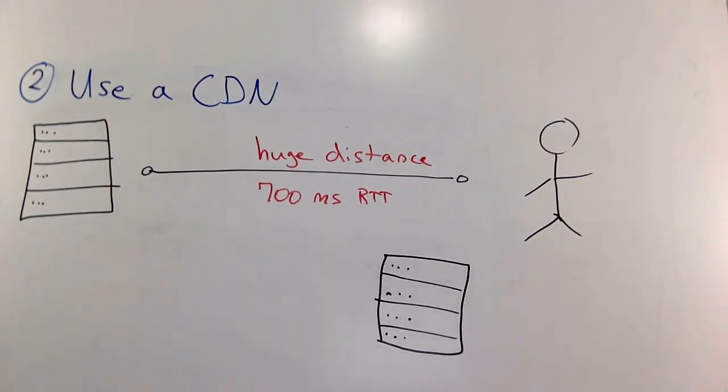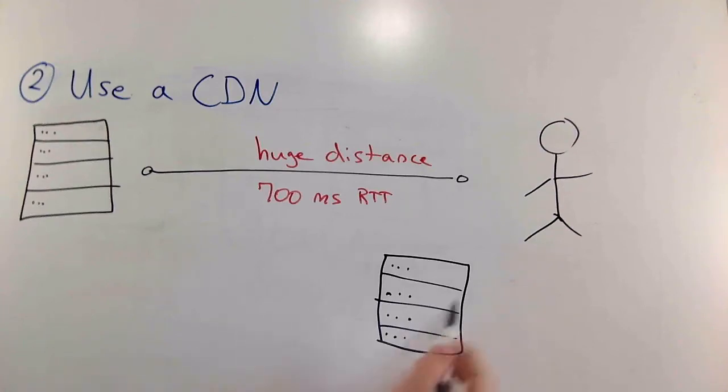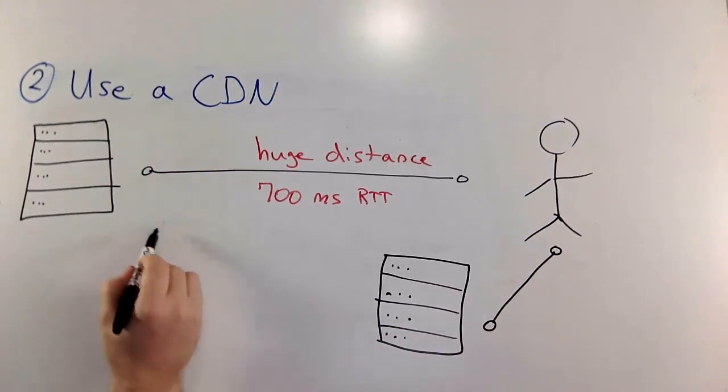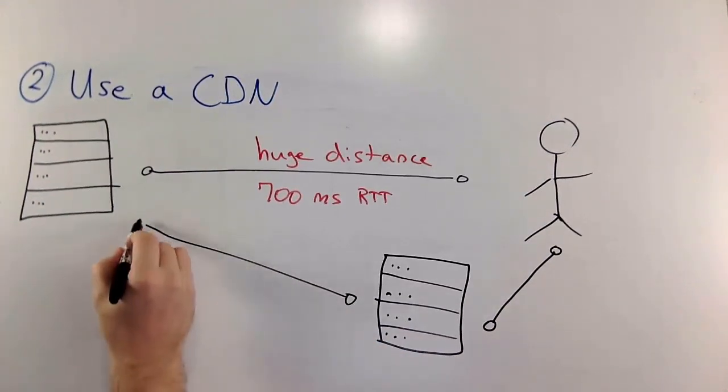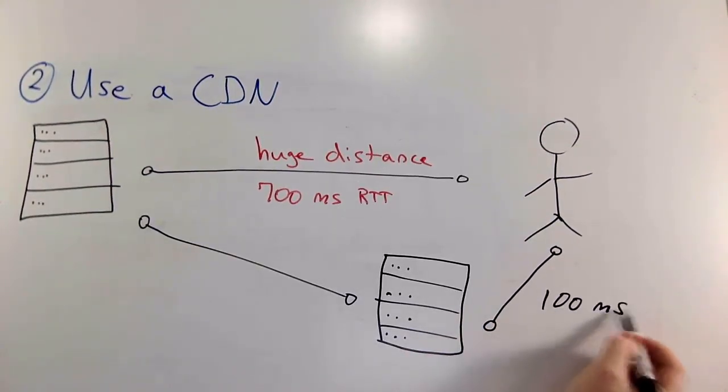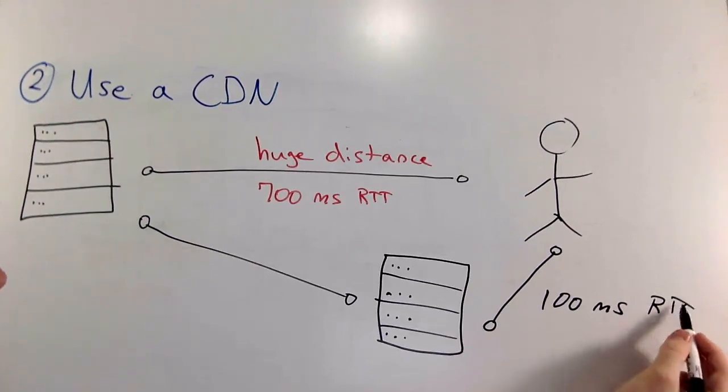So instead of crossing the big, vast lands and oceans, what's going to happen is the user is going to request here and the CDN is going to pull files from your server. So depending on your cache rules, which we're going to cover in a little bit, this is what you have. This is much shorter distance. And let's say that you get about 100 milliseconds here. You just shaved off 600 milliseconds.